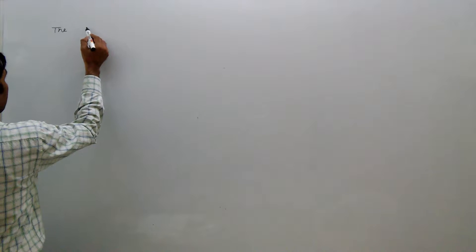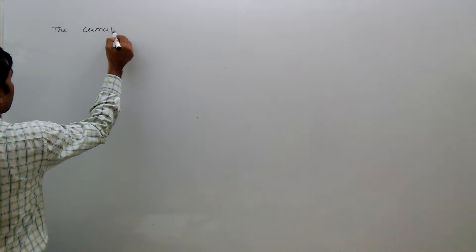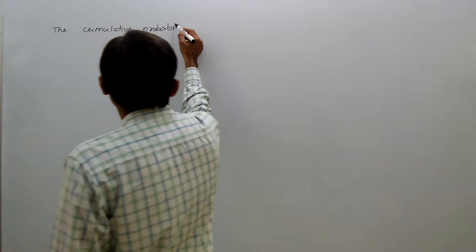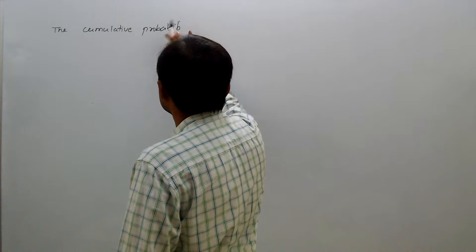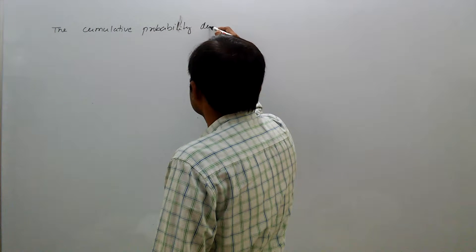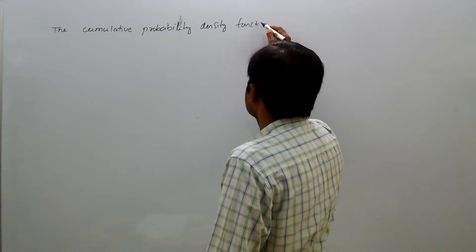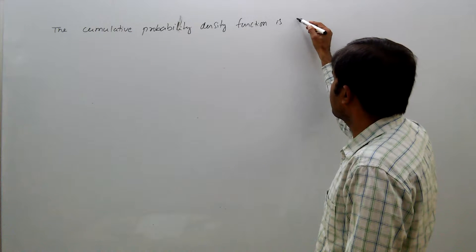The cumulative probability density function is represented by the following graph.